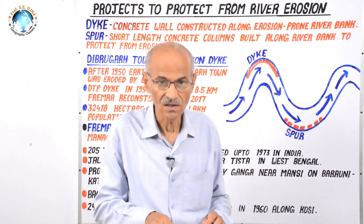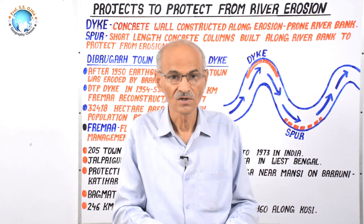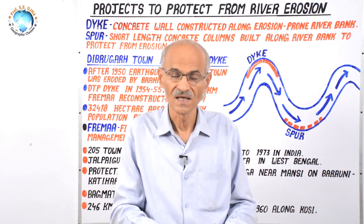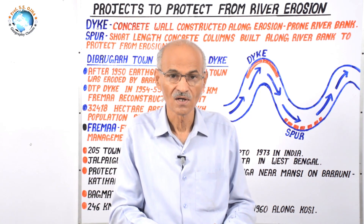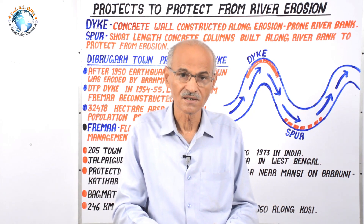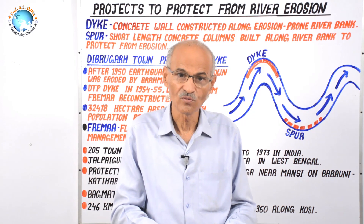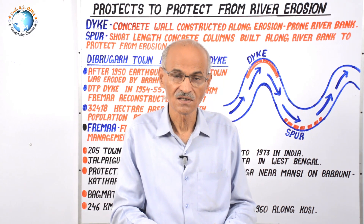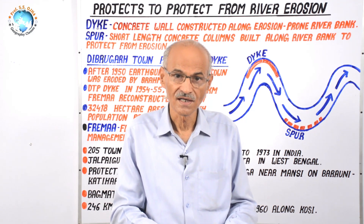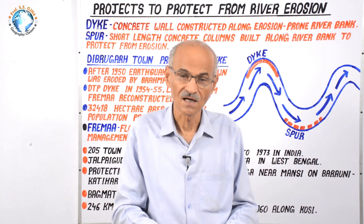The same is true for spur — it has two meanings, one natural and one man-made. To understand the natural meaning of spur, you need to reach the meeting point of a plateau and a plain. For example, at the northern margin of the Indian plateau and the south part of the Gangetic plain, rivers like Chambal, Betwa, Ken and their tributaries flow from the plateau and fall onto the plain, cutting deep valleys along the margin.